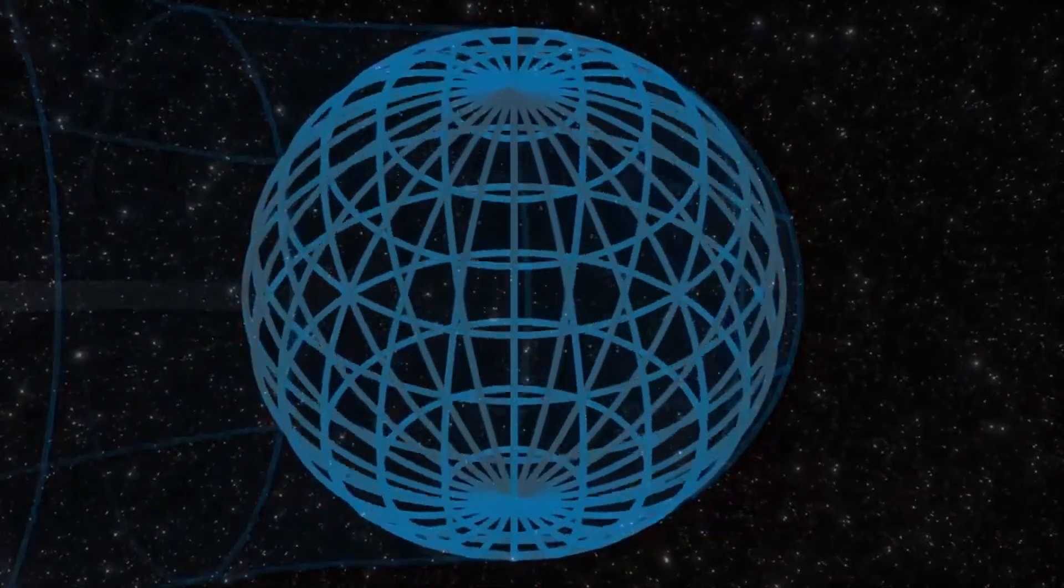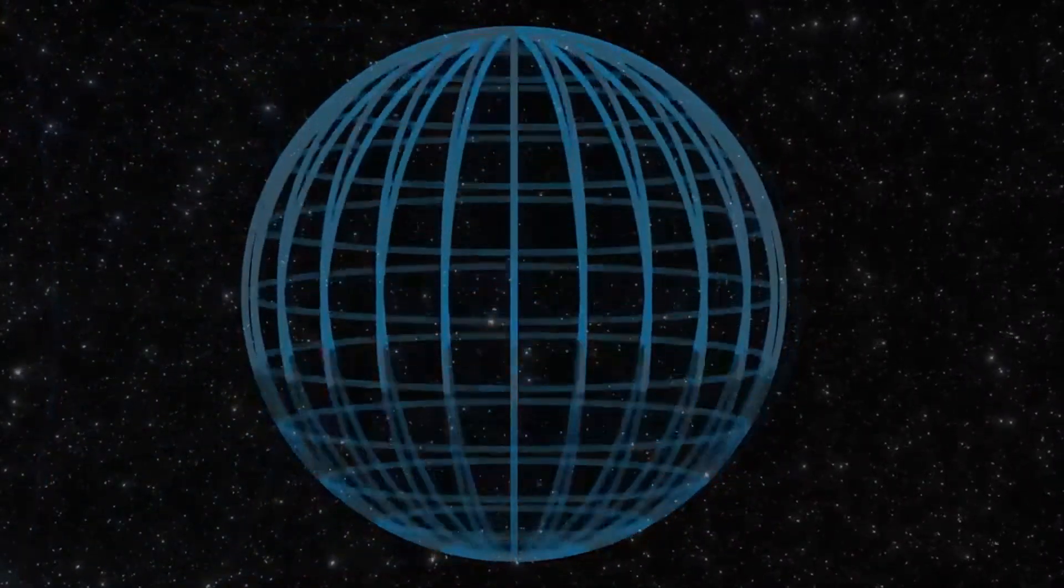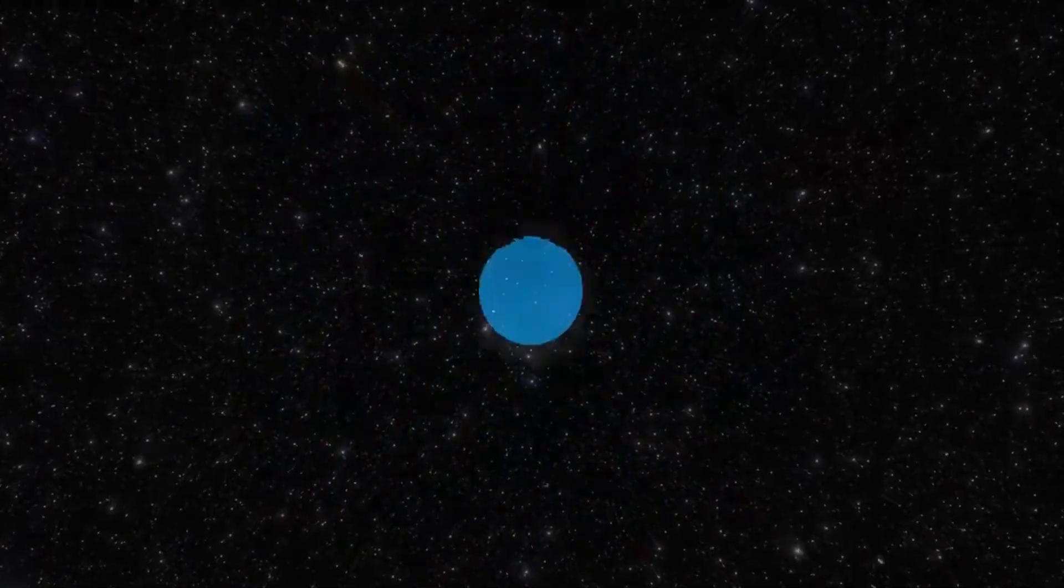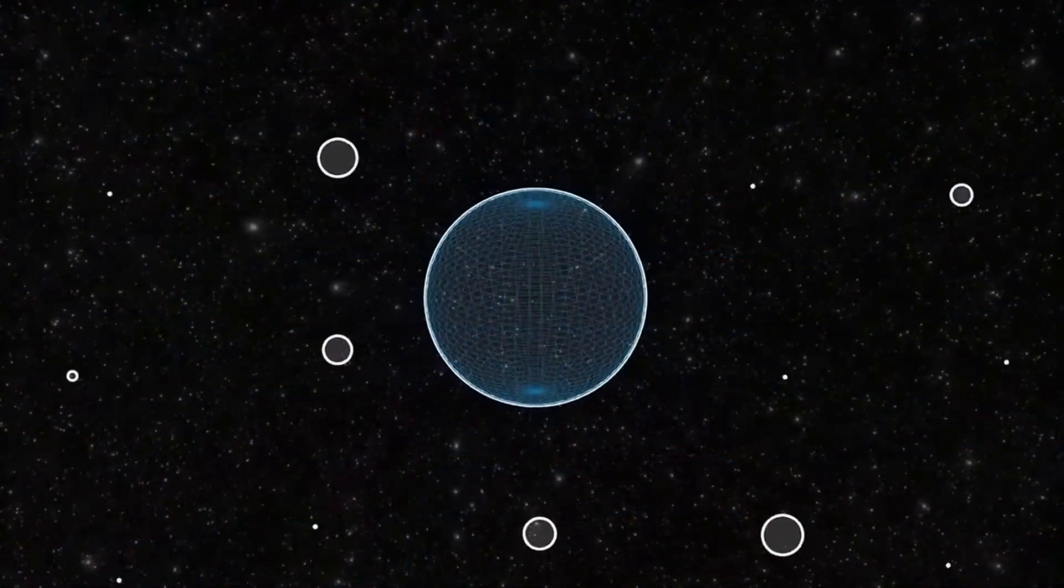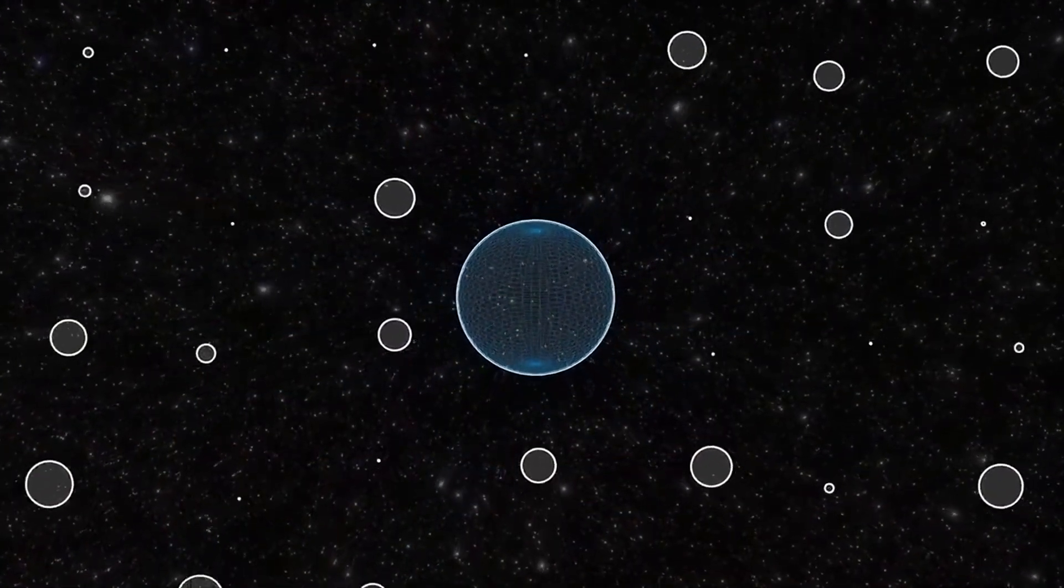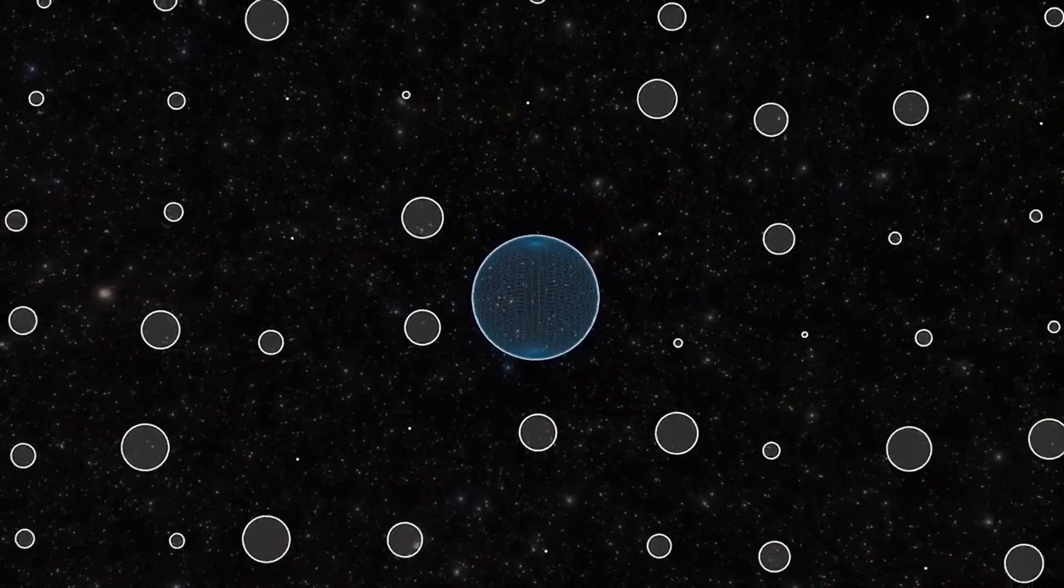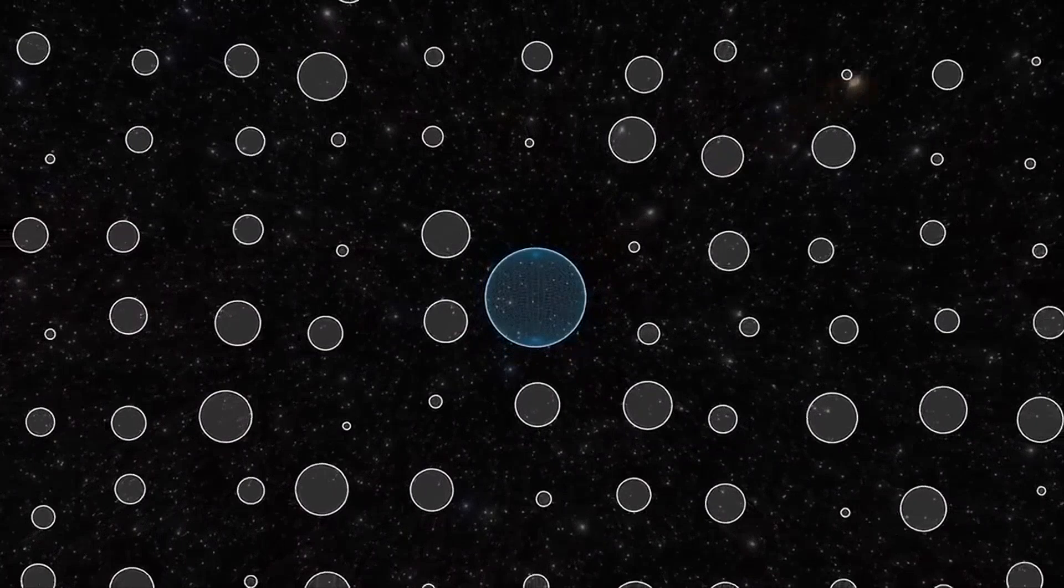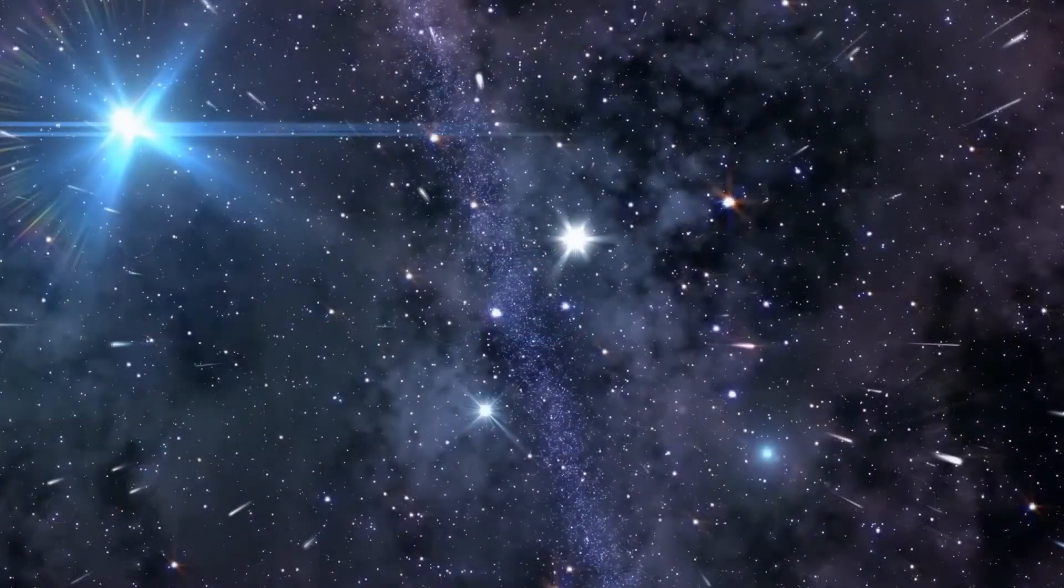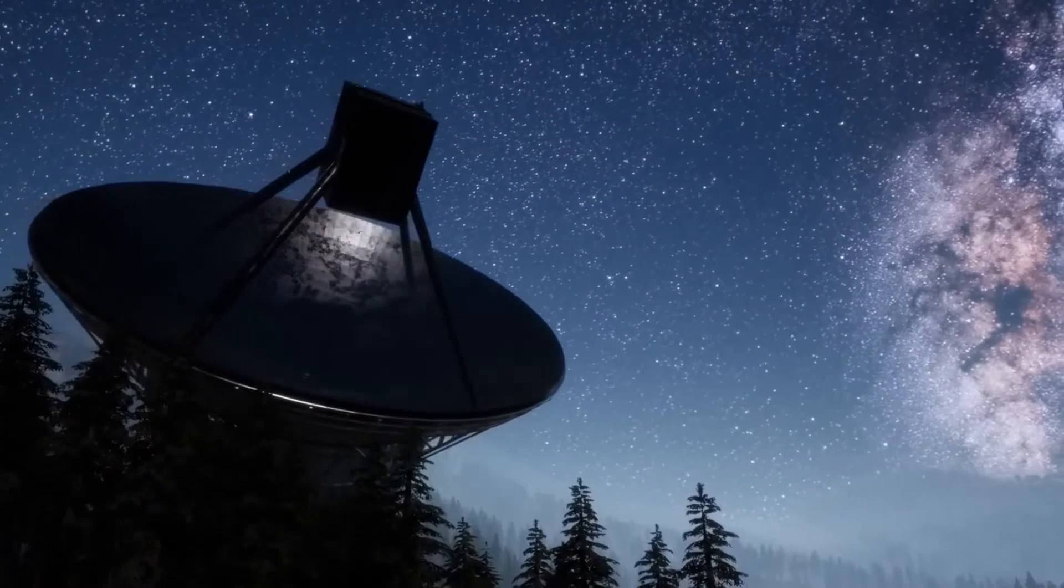And although gravity is strong on a cosmic scale, it is quite weak on a small scale. So weak that when a magnet attracts a paper clip, the paper clip overcomes the gravitational force of the entire planet and moves in the direction of the magnet. This means that one graviton, if it exists, must be very weak. And to measure it, you need a detector the size of Jupiter.